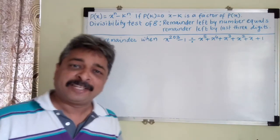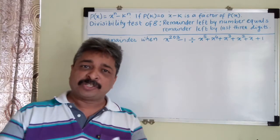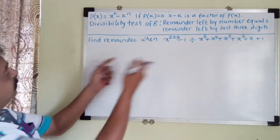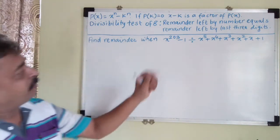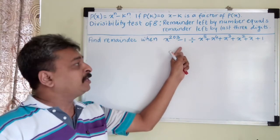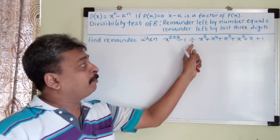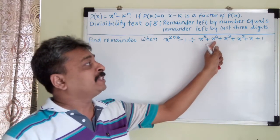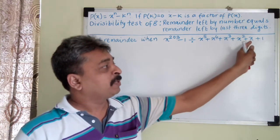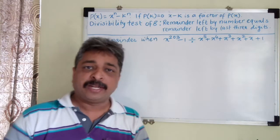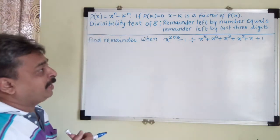Let me take this opportunity to discuss this problem: find the remainder when x raised to 203 minus 1 is divided by x raised to 5 plus x raised to 4 plus x cubed plus x squared plus x plus 1. What is the remainder left? We need to find out this.